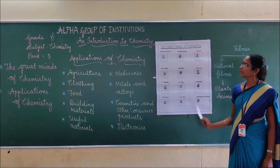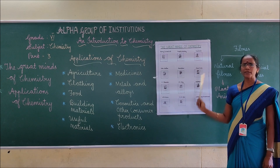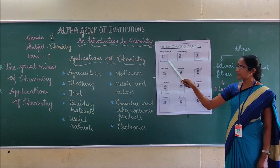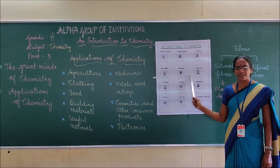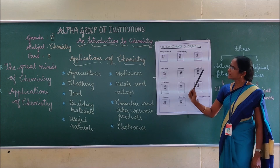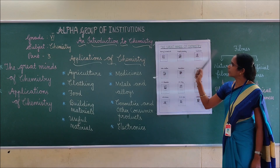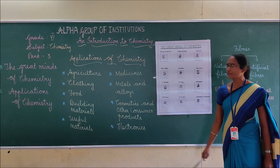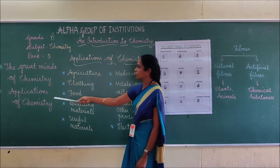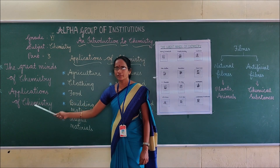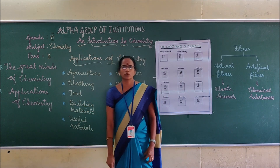So these are the facts about scientists as well as their inventions and discoveries. That's the things about the great minds of chemistry. Next, we can move to the applications of chemistry.